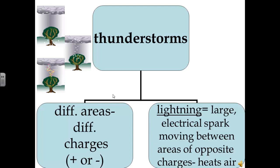Lightning is an electrical spark moving between areas of opposite charge. Lightning can warm air to 30,000 degrees Celsius in a fraction of a second. This high temperature causes the air to expand so rapidly that it makes vibrations in the air, which we hear as thunder. What we see as one flash of lightning is often many flashes of both positive and negative charges going up and down. Lightning often hits tall objects. If you cannot get inside a building during a thunderstorm, move away from trees or high towers. Stay low, but do not lie on the ground.